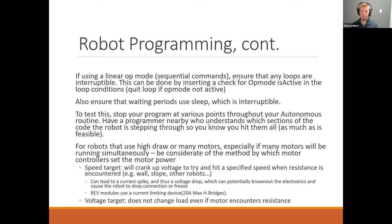When testing and debugging your autonomous program, you can verify whether it's interruptible by starting the program and then manually stopping it via the driver station at various points. If your autonomous is non-interruptible, stopping it early will cause it to keep executing and be unresponsive — which is not what we want. This can be tedious to test completely, so try the critical junctions like large moves, turns, or sensing opportunities.